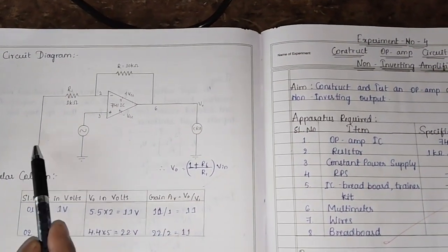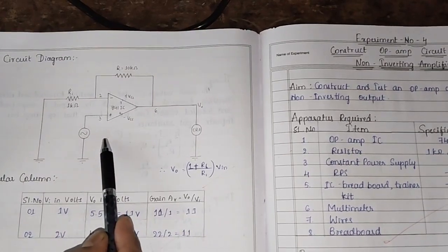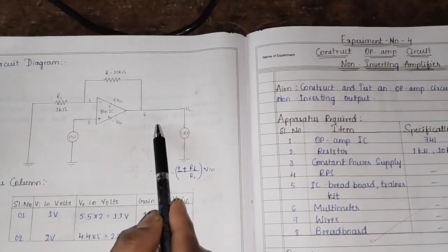What is a non-inverting amplifier? Whenever we give input at pin number 3, we obtain amplified output at pin number 6.